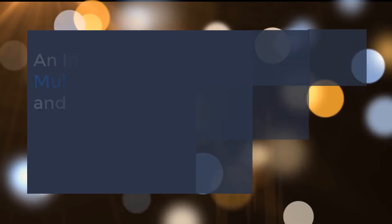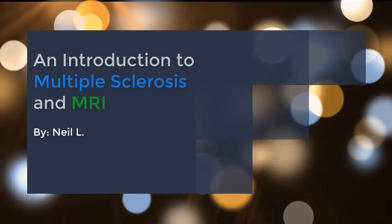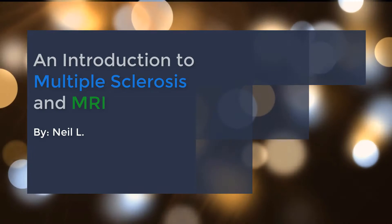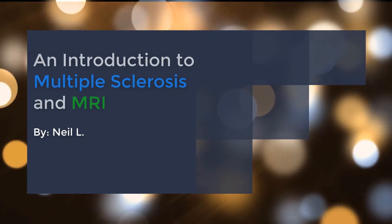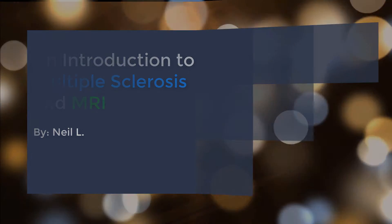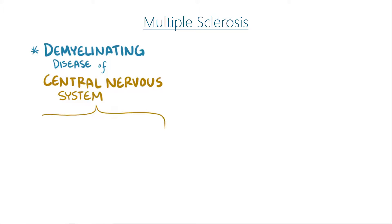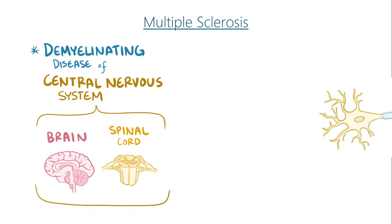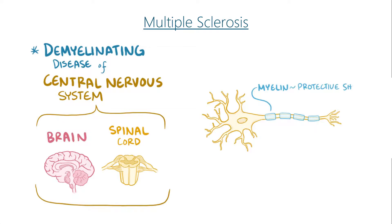This video will present the disease of multiple sclerosis and the MRI imaging technology which is used to diagnose it. Multiple sclerosis is an autoimmune demyelinating disease which affects the brain and central nervous system. The disease attacks myelin, the protective sheath covering of nerves which is essential to the transmission of nerve impulses.